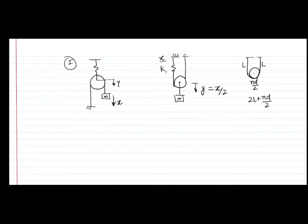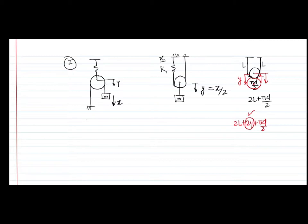Suppose I pull the center downward by an amount Y, bringing the pulley down by Y. The new length of the string will be 2L plus 2Y plus pi*D/2. So if the center moves down by Y, the change in total string length is 2Y. This means when the center comes down by Y, the increase in length is twice that value, because rope is needed on both sides of the pulley. So if the increase in spring length is X, each side takes X/2, and the displacement of the center of the pulley is X/2.